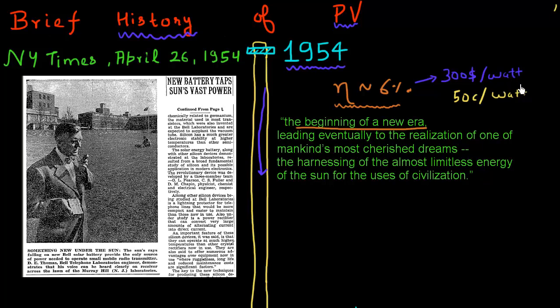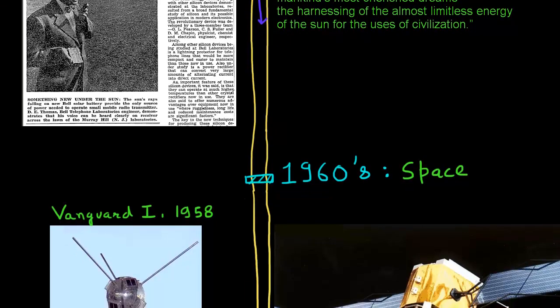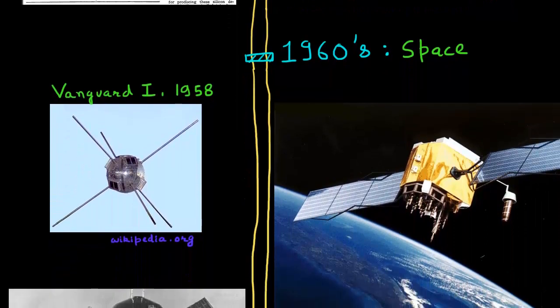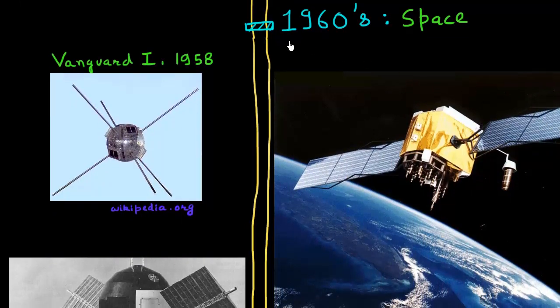This was a very high barrier. Even though the efficiency of the cell was 6%, it was not being used to make electricity on a large scale. It was not being used for mainstream electricity generation. The first saving grace, the first application for this Bell Labs invention of solar cells, came for space applications.